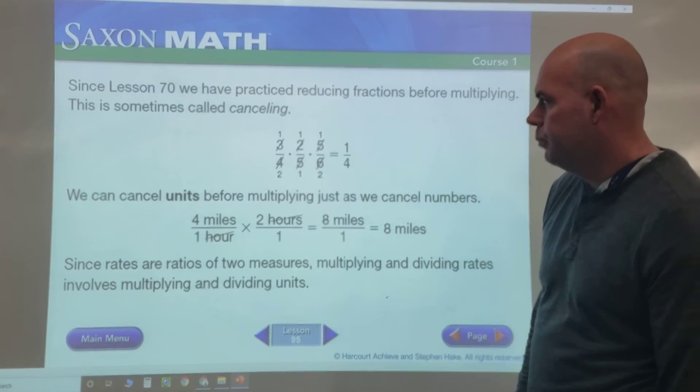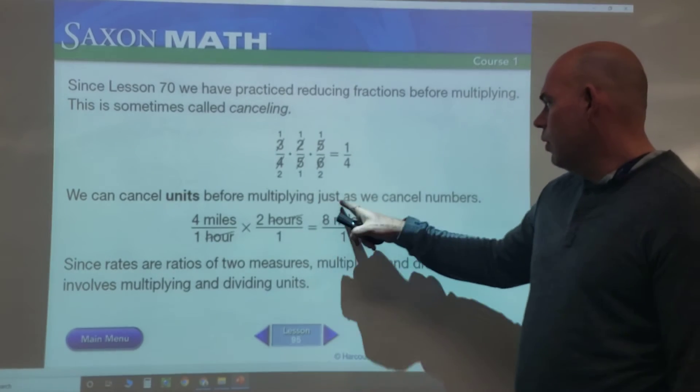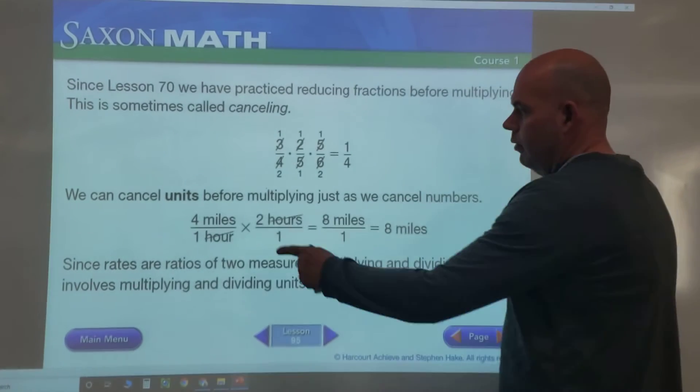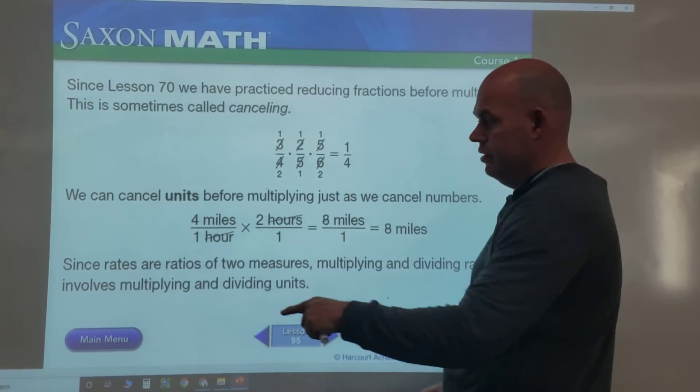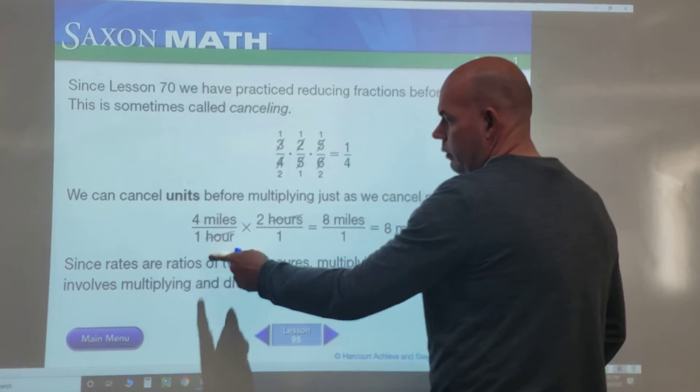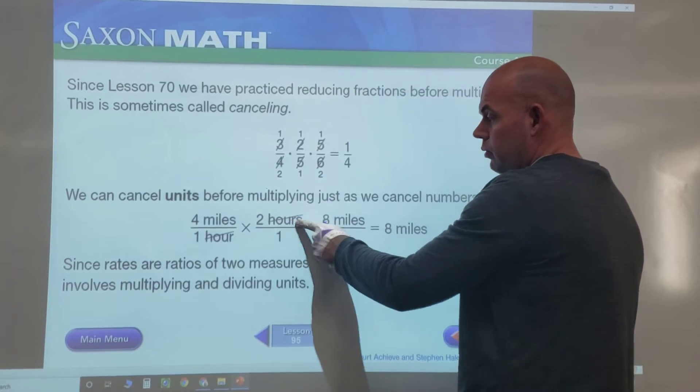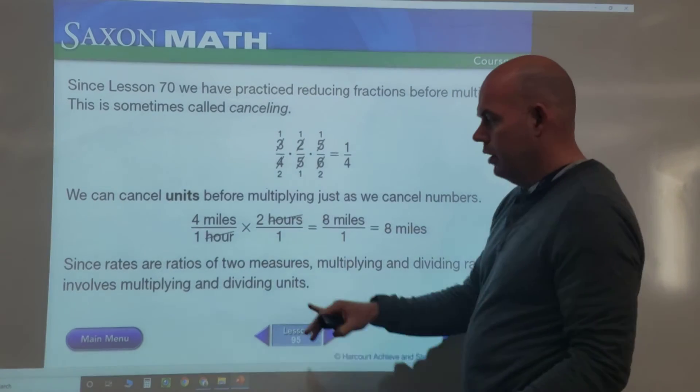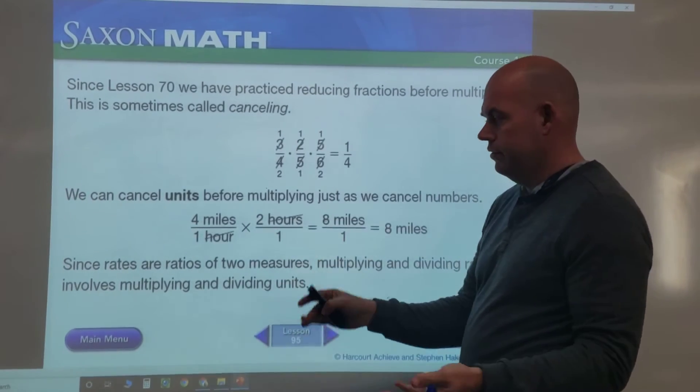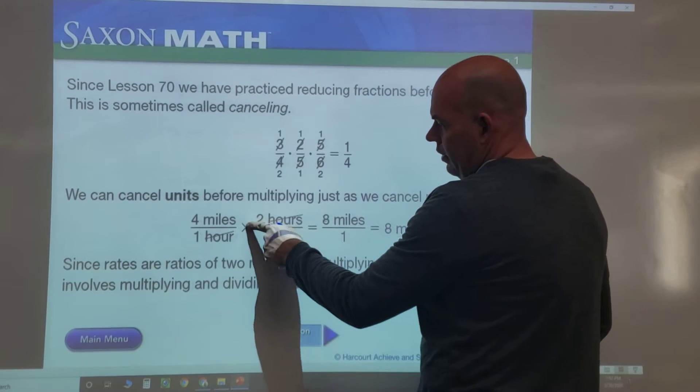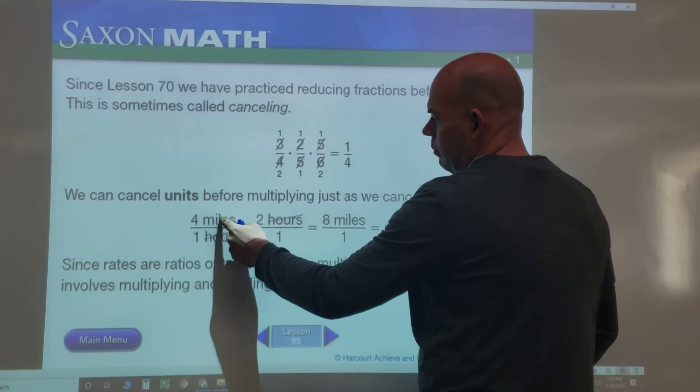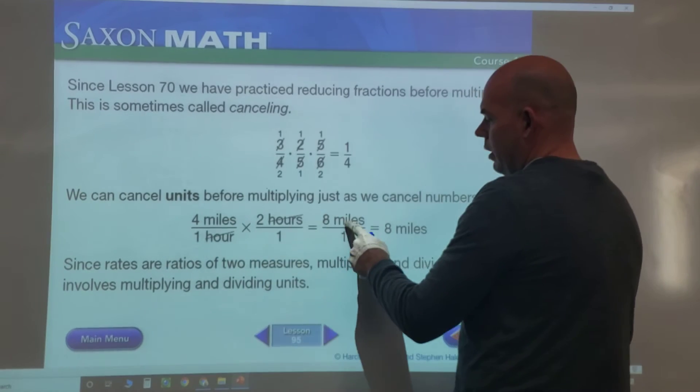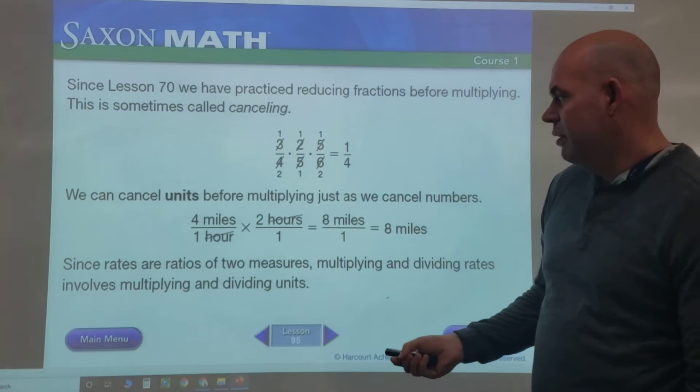Now with units, we've done this before. We can cancel out numbers. Four miles per hour—remember 'per' means division—so 4 miles per hour times 2 hours. You can put anything you want over 1 because that just means it's whole. We cancel out hour and hour, then we just have 4 miles × 2 = 8 miles. Pretty simple.